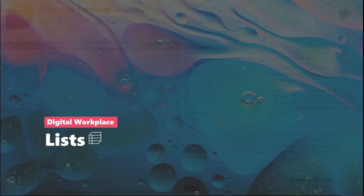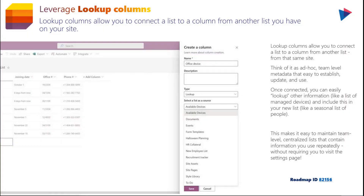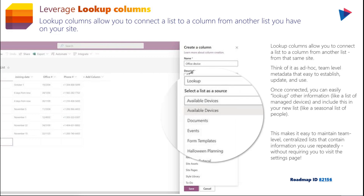Moving on to Microsoft Lists — if you weren't aware, this should now be available in almost everyone's tenant. In your sites, you have the ability to create multiple lists, and now you can leverage lookup columns to connect different lists together. You select the lookup column in your list, specify the source list, and connect them — very cool functionality that was available before in SharePoint on-prem and is now available in SharePoint Online.